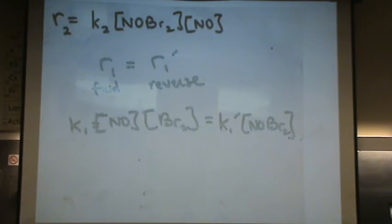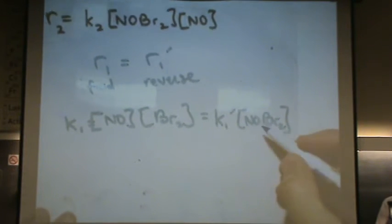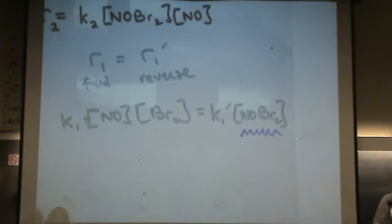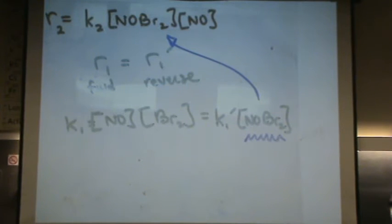And then this equals the reverse K1 prime times the reverse reaction would be NOBr2. Now you might be wondering why would I care about the fast reaction? Well the cool thing is there's our intermediate that's up here. And that's not an intermediate. So if I solve for my intermediate, I can plug it in to my original equation and have a rate law that does not have an intermediate in it.